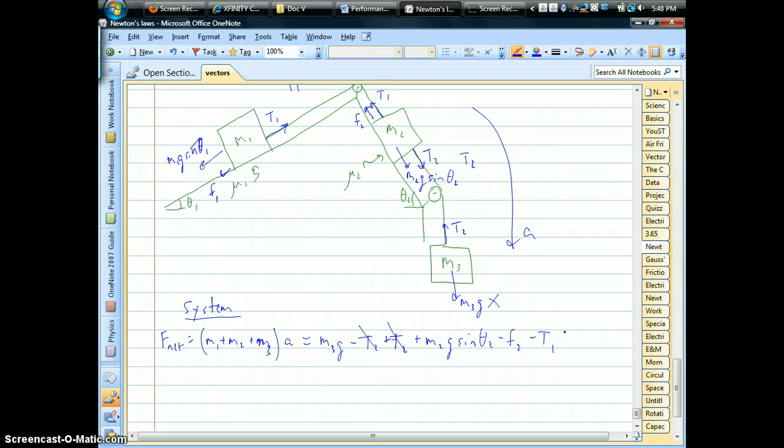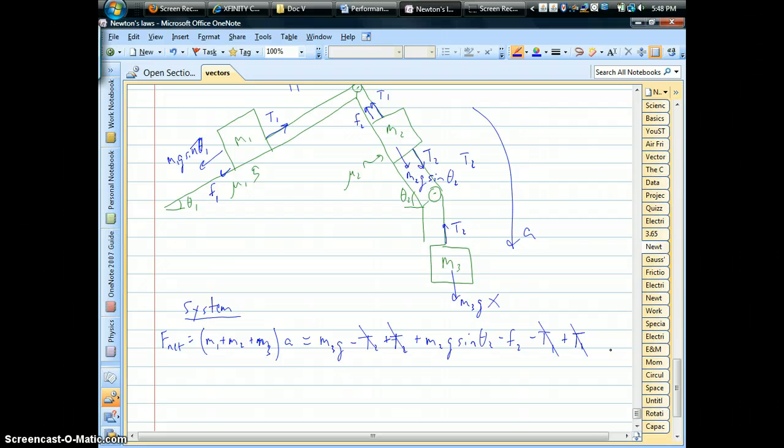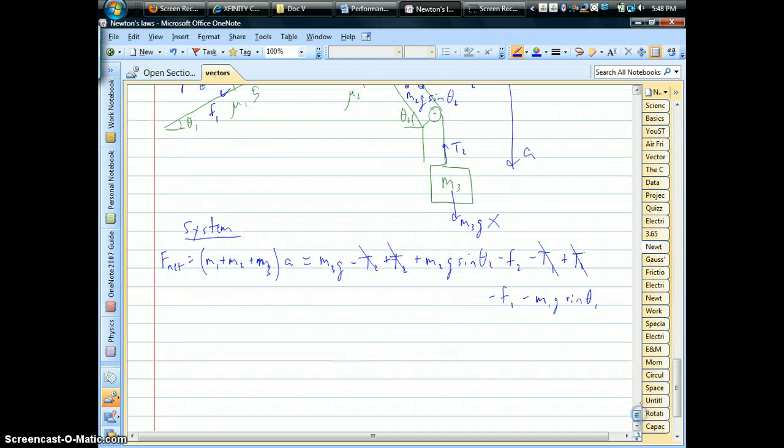Okay, and that's it for that block. Now we go to mass one, and there again, there's an internal force. Tension one is trying to make that one go. So, that's going to drop out of the system. And then those other two forces, the friction and the downhill gravity, are negative forces on that block.